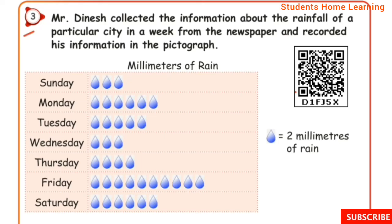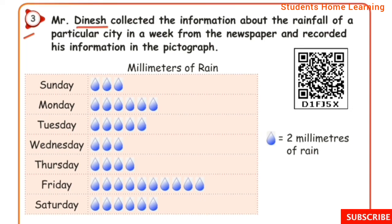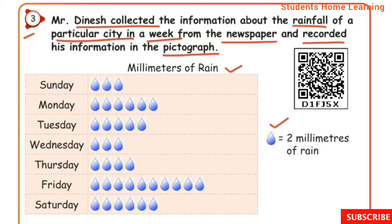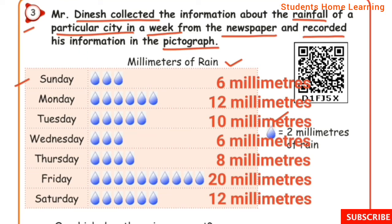Mr. Dinesh collected information about the rainfall of a particular city in a week from the newspaper and recorded it in a pictograph. Each picture = 2 mm of rain. Sunday: 3 pictures, 3×2 = 6 mm. Monday: 6 pictures, 6×2 = 12 mm. Tuesday: 5 pictures, 5×2 = 10 mm. Wednesday: 3 pictures, 3×2 = 6 mm. Thursday: 4 pictures, 4×2 = 8 mm. Friday: 10 pictures, 10×2 = 20 mm. Saturday: 6 pictures, 6×2 = 12 mm.